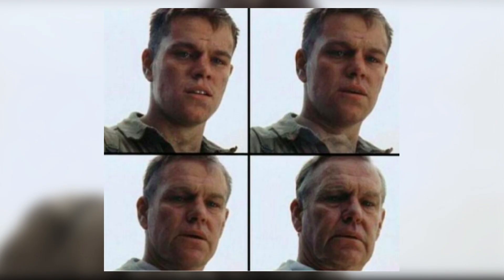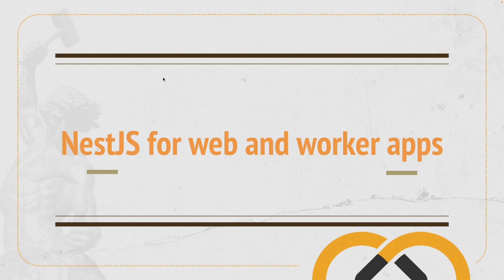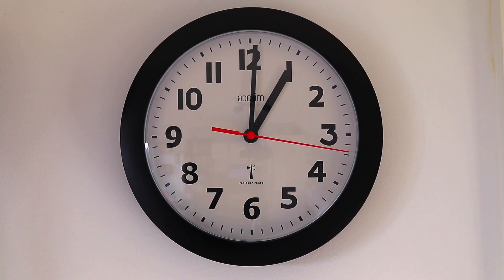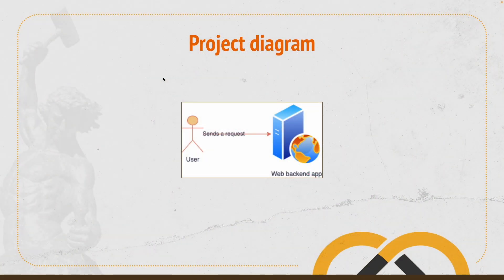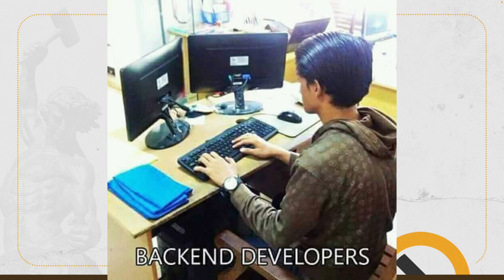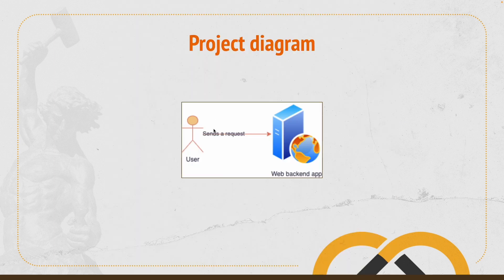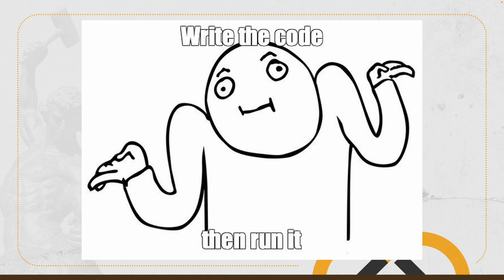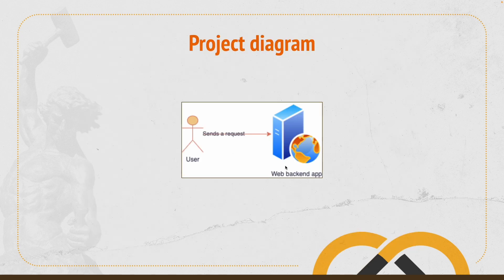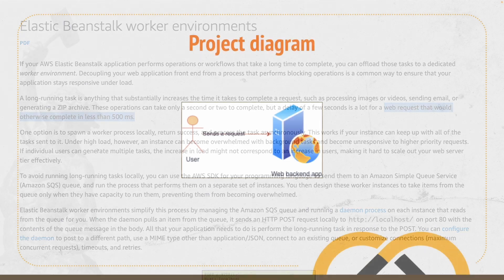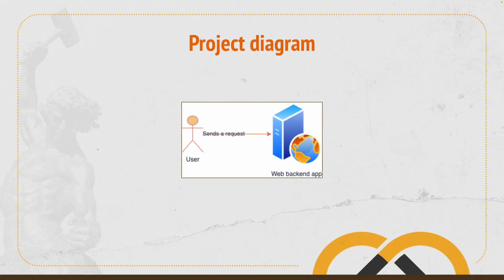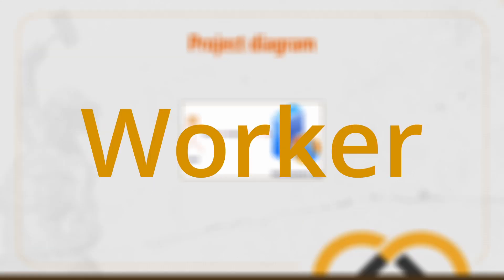If you've managed to software engineer for a while, at some point you'll probably have to create something that can take many minutes or even hours to run. Usually the initial approach for someone with a backend experience is to create a common HTTP endpoint on the backend app and just run the code. However, platforms like Elastic Beanstalk suggest that if the code takes more than 500 milliseconds, then you should consider running the code asynchronously using a worker machine.